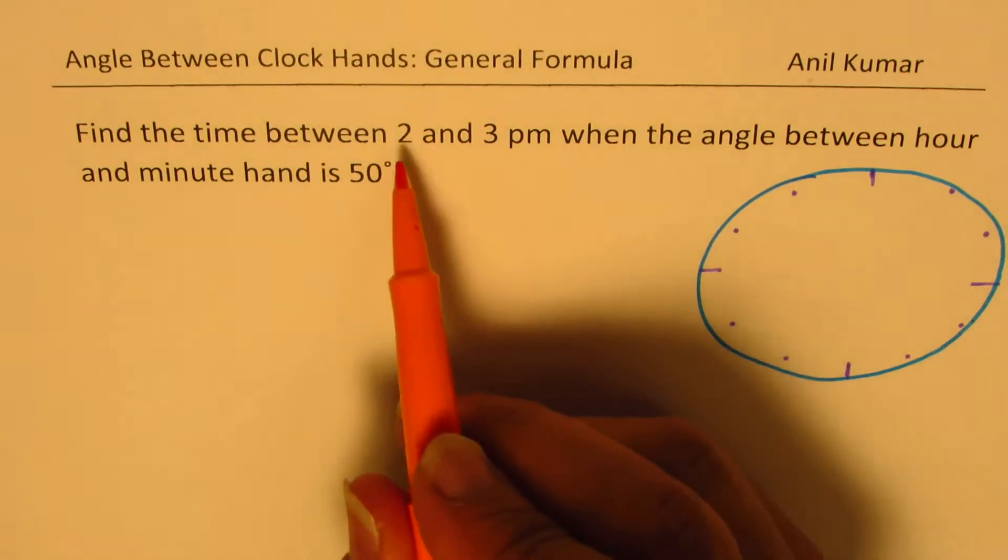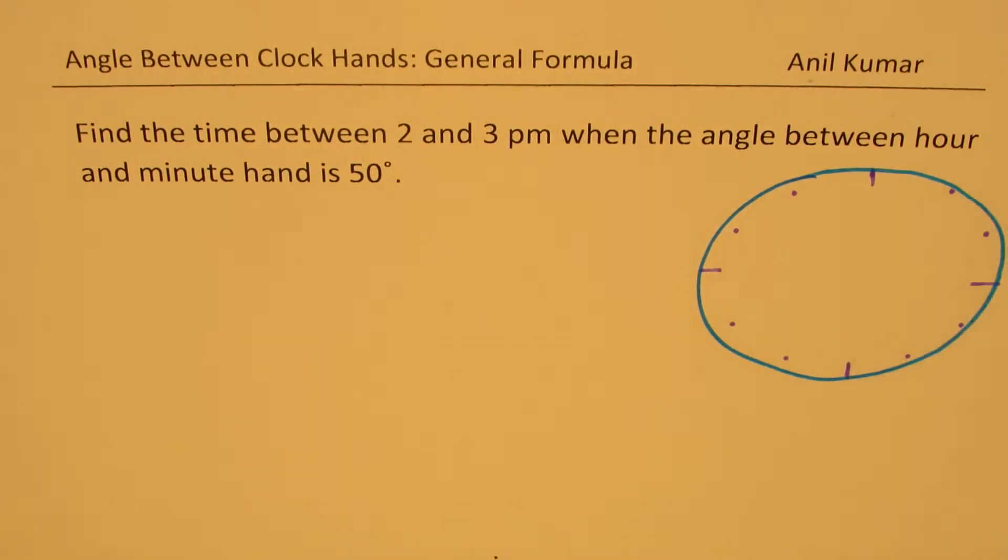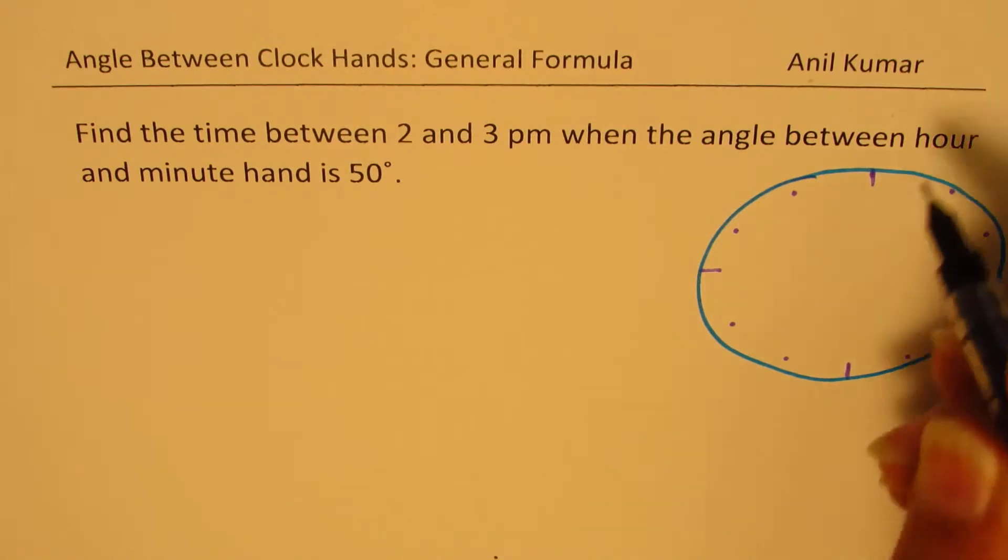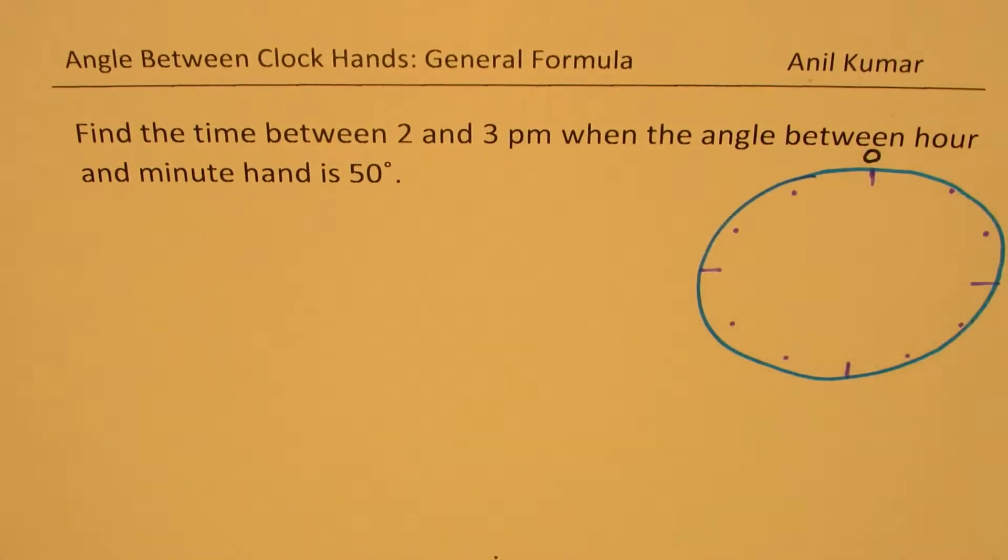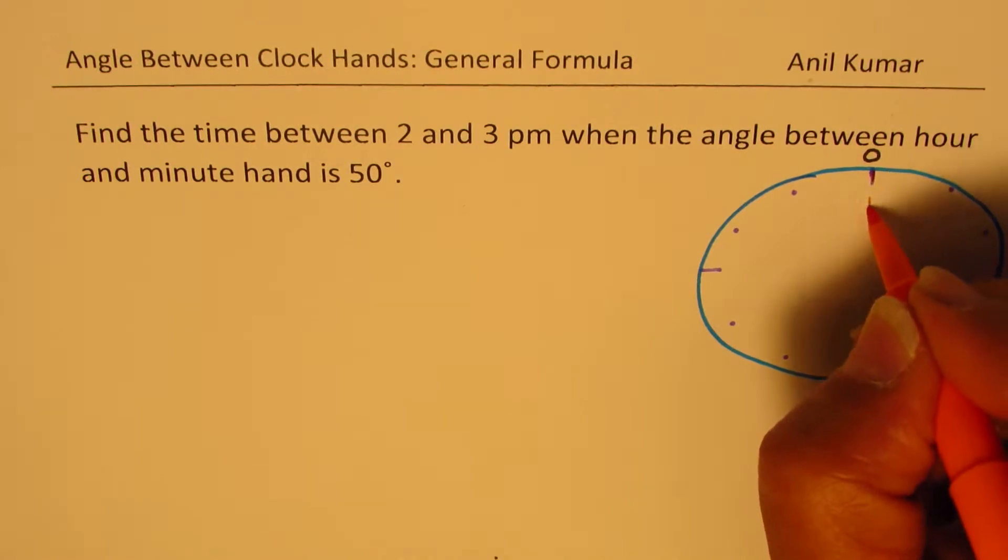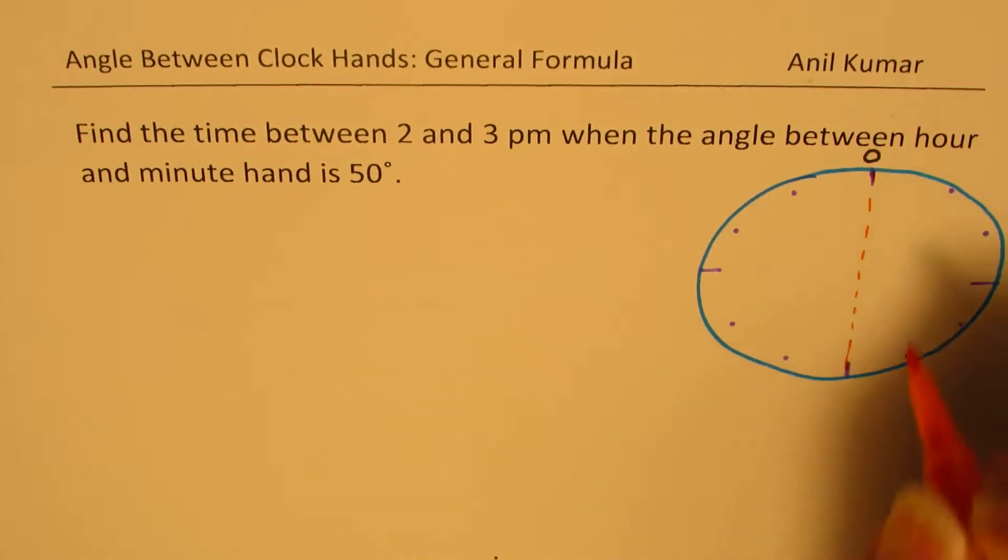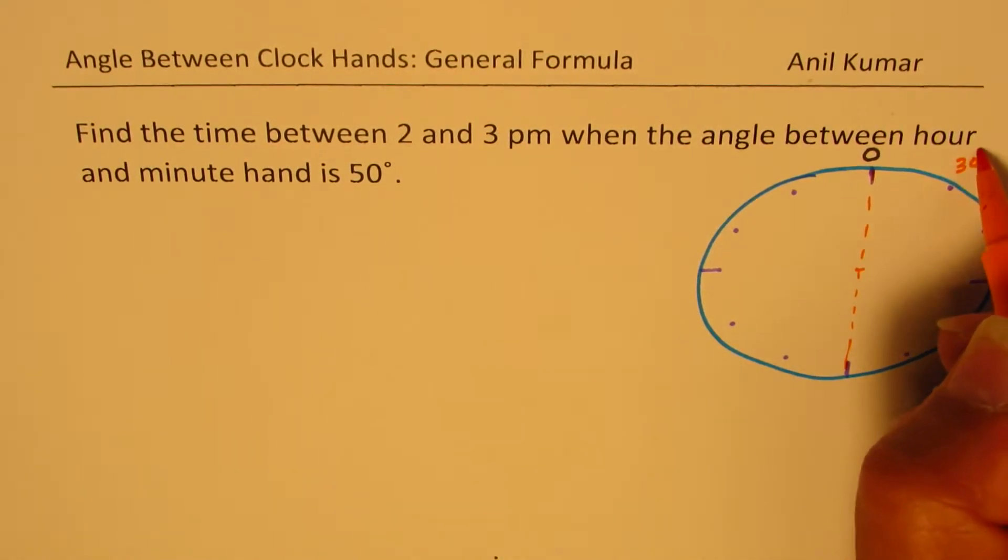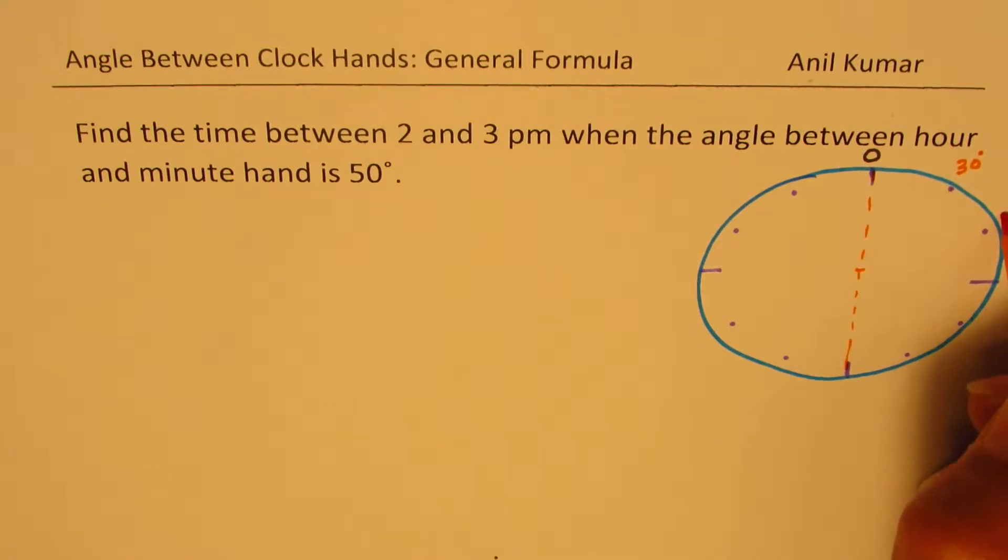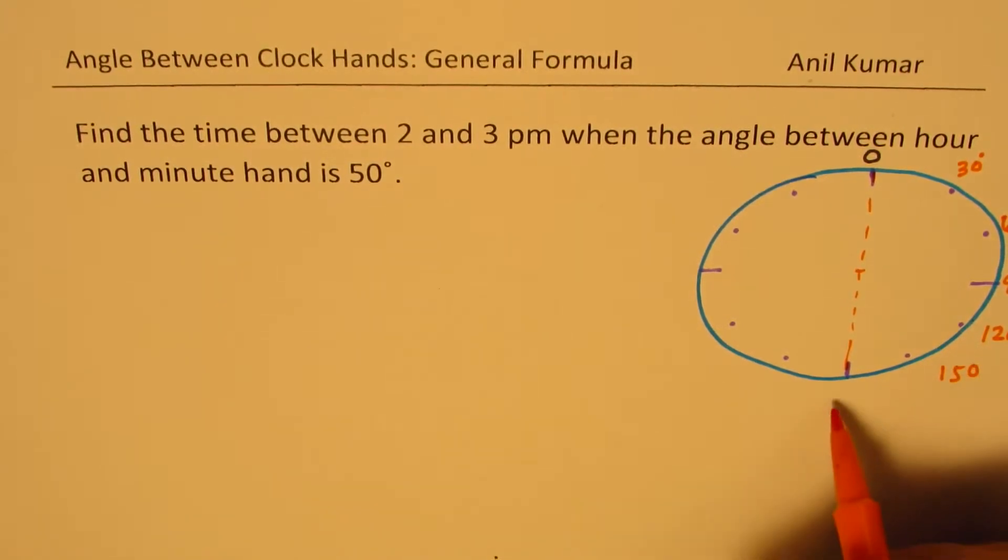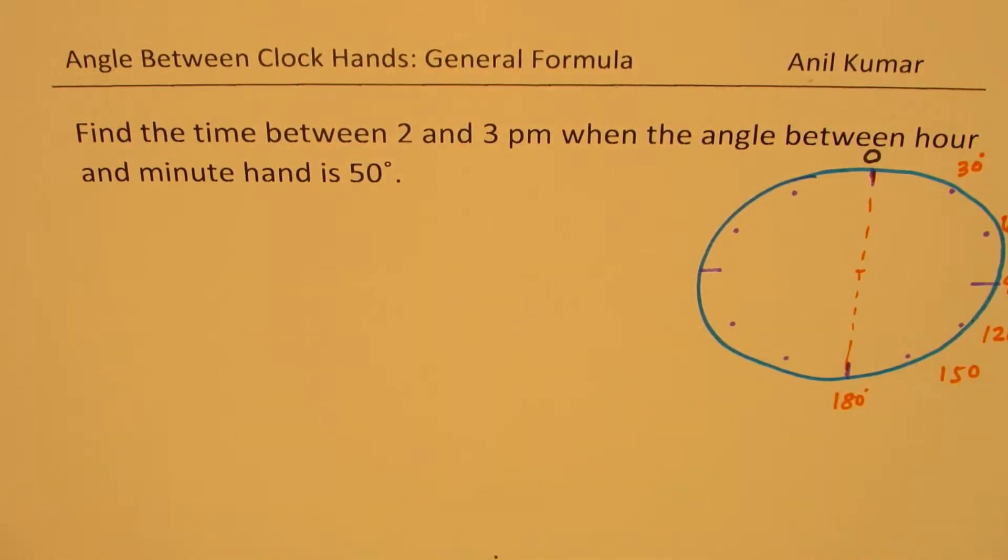So one position could be, as far as the angles are concerned, let's be very clear about it. Let's say if this is 0, then the angle from here to the center, we can say this each is actually 30 degrees, right? So each is 30 degrees. So 30, 60, 90, 120, 150, 180, and so on. So that is how the angles are.